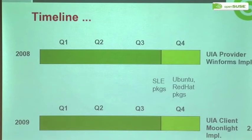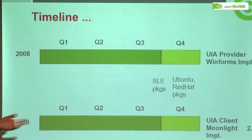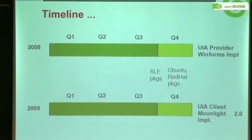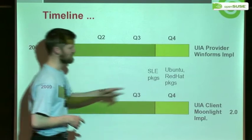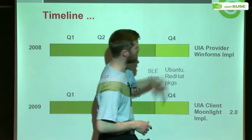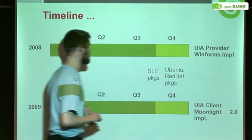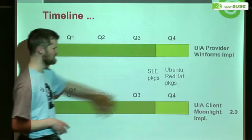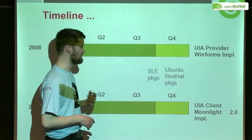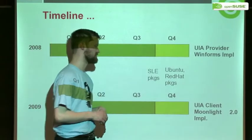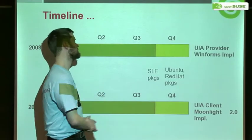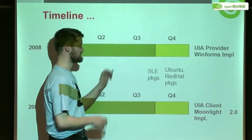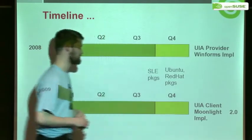Here's the timeline. The punchline is it falls neatly into two equal parts. The first year we do something, and the next year we do something else. First of all, we're starting off with the UIA provider and the WinForms implementation. We'll be shipping it first on SLED, but then moving on to package it and ship it for Ubuntu and Fedora, which is interesting — so it will be everywhere. And doing QA and bug fixing in the last quarter.